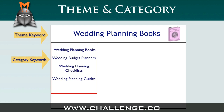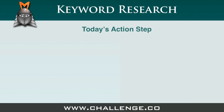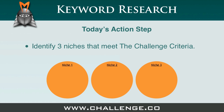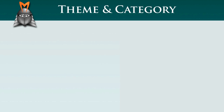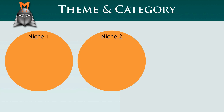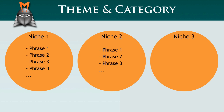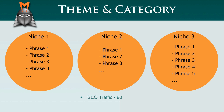Now that you understand what theme and category keywords are and how to find them using Market Samurai, it's time to take action. Today's action step is to explore the niches you've been looking at and identify three niches that meet the challenge criteria — specifically, three different niches that each contain at least three or four phrases with an SEO traffic value of 80 or above, a phrase to broad match ratio of 15% or above, and an SEO competition value of 30,000 or less.